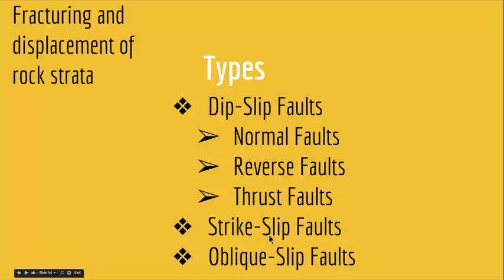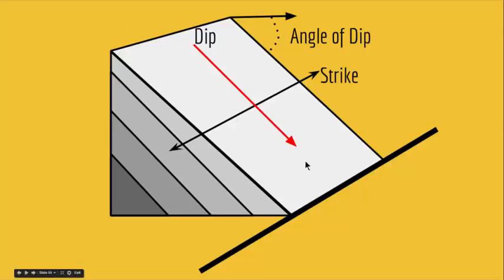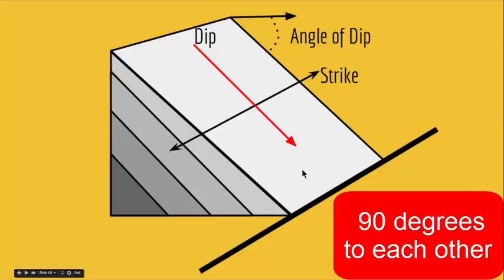But what are dip-slip and strike-slip faults? The dip and strike come from the concept of a dipping bed. Imagine you have strata going into the earth at an angle — the angle between this layer and a horizontal line is called a dip. The line where the strata intersects the earth surface is called a strike.